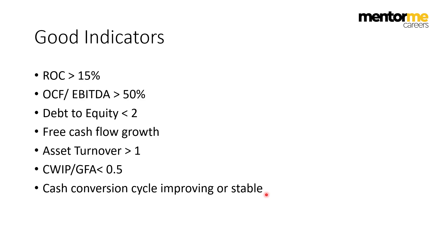The cash conversion cycle should be improving or stable — lower receivables days, lower inventory days, and well-negotiated payable terms, so the company generates cash sooner. If you run these checks on a universe of 3,000 to 5,000 companies, the resulting number will probably shock you. That's how Titan was filtered and why we decided to research it further for DCF valuation. That's the end of the forensic check — now we'll start building the financial model for Titan.